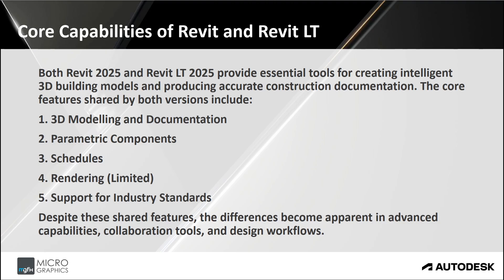Parametric components — Revit families — are an integral part of both versions, enabling users to create and use parametric components for walls, windows, doors, roofs, floors, stairs, ramps, and other building elements. Schedules are automatically created and generated from the model in both versions, ensuring accurate data for quantities and project analysis. Schedules can be filtered, grouped, sorted, and additional filters can be added such as a firewall rating or a rule-based filter.